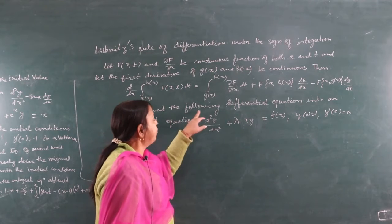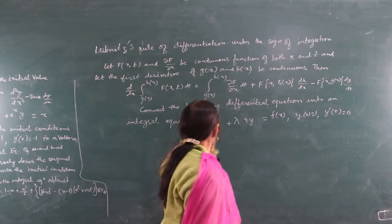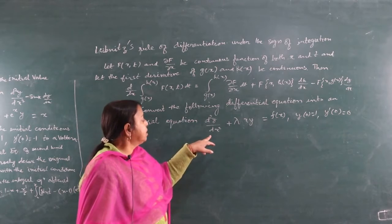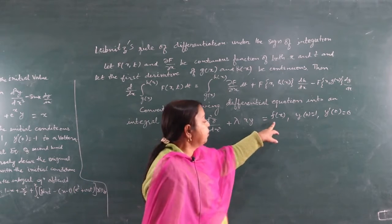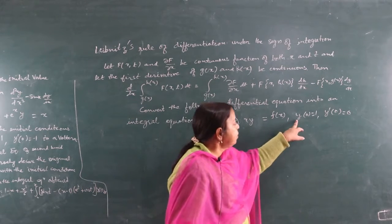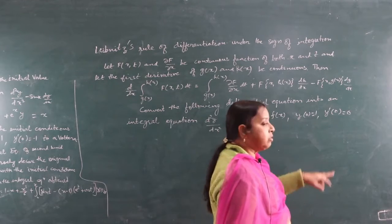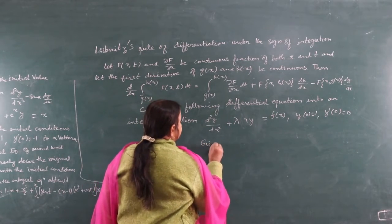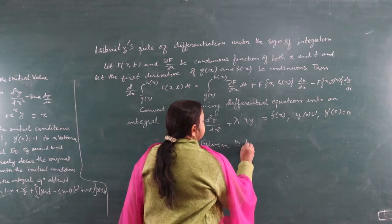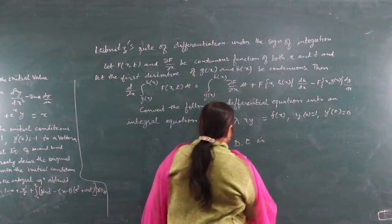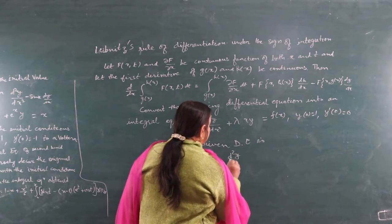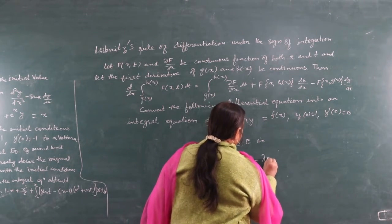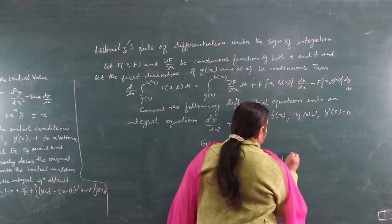Convert the following differential equation into an integral equation: d²y/dx² + λxy = f(x), with y(0) = 1 and y'(0) = 0. The given differential equation can be written as d²y/dx² = -λxy + f(x).